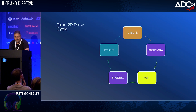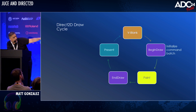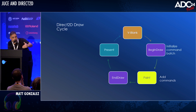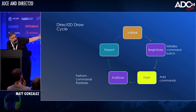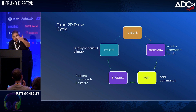Let's talk about what the renderer actually does. There's a pretty simple draw cycle. We wake up when there's a vertical blank notification from the monitor, then tell Direct2D we'd like to begin drawing. Direct2D initializes its internal command batch. We move on to the paint handler — that's where the paint callback for your JUCE component gets called. As your paint callback executes graphics calls, we build up the command queue. Eventually the paint handler exits, we call EndDraw, and at that point the command queue is pushed to the GPU. The GPU executes it, rasterizes the bitmap, and we present that to the screen.